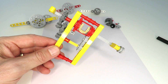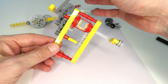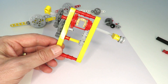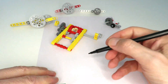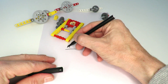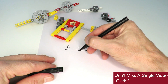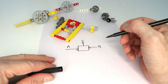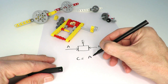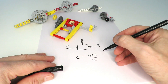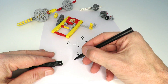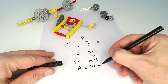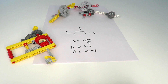We can think of a differential as having two inputs and one output. The inputs are these two axles and the output is the central barrel that rotates as you turn these axles. If we draw the differential as having input A, the barrel in the middle, input B, and output C, then the relationship is simply that C is the average of the rotations of A and B. We can rearrange this to write that 2C equals A plus B, which means A equals 2C minus B.